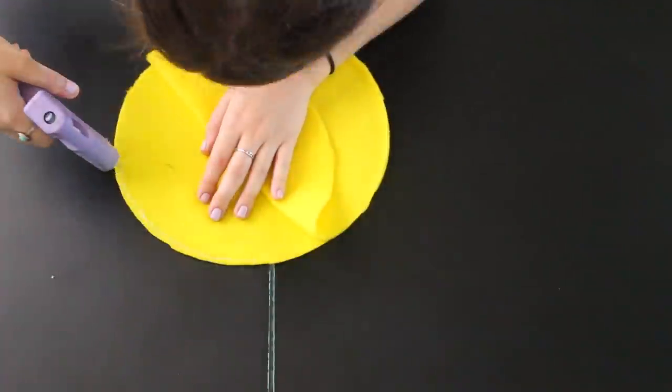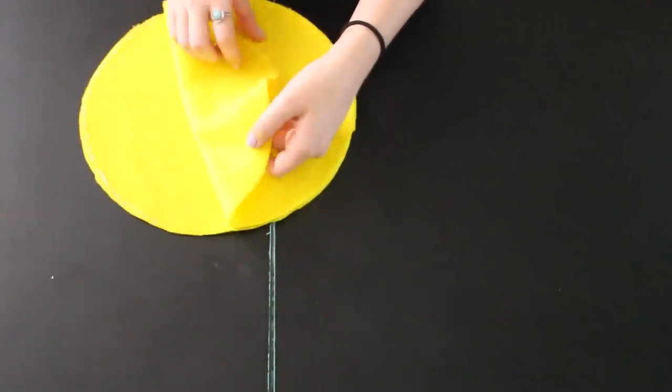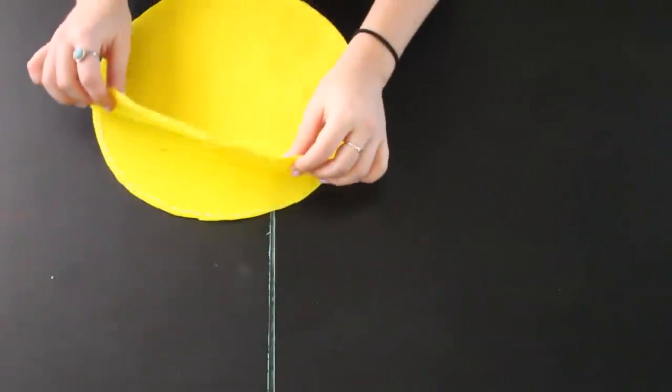And then all you have to do is start hot gluing. So you just start going around the edges and hot gluing them together, but you want to make sure that you leave a little space open, like right here, that way you can flip it to inside out and have a place to put the stuffing in.